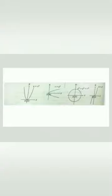Looking at the graphs: for y = x², symmetry with respect to the y-axis; for x = y², symmetry with respect to the x-axis; for x² + y² = r², symmetry about both x and y axes; and for y = x³, symmetry with respect to the origin.